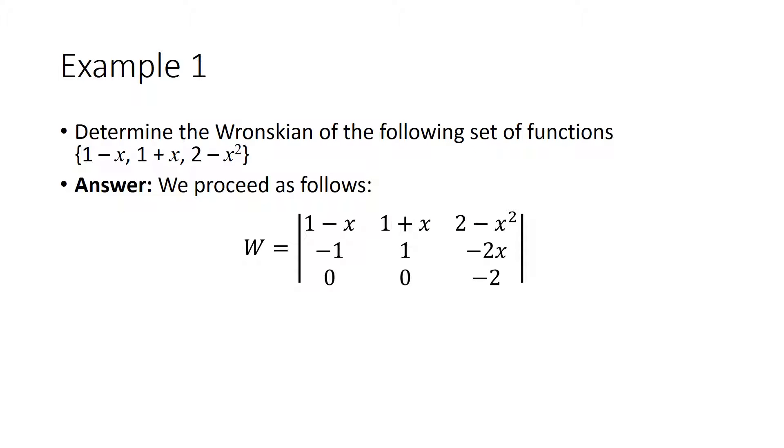Our first example we're asked to determine the Wronskian for the following set of functions: 1 minus x, 1 plus x, and 2 minus x squared. We shall proceed as follows.